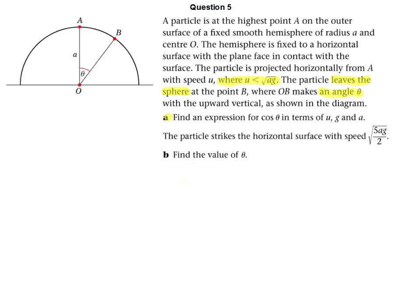We have been asked, in part A of this question, to find an expression which relates the angle at which it leaves the sphere to various variables: the initial speed, the strength of gravity, and the size of the hemisphere. And that's it, it's not given us any hints about how to do it. We need to try and figure out a plan.